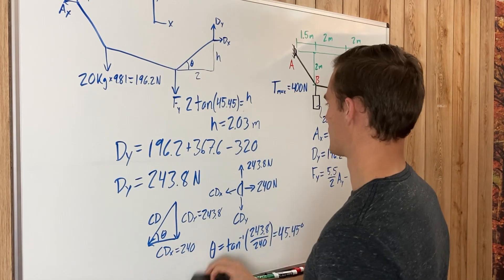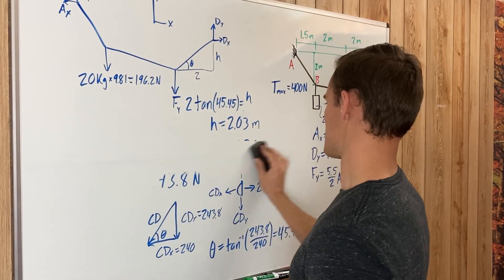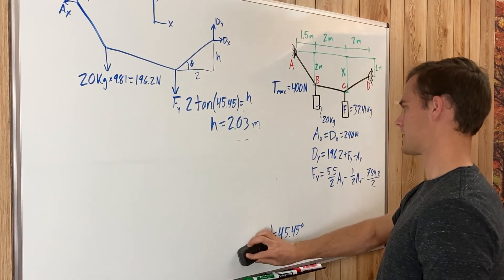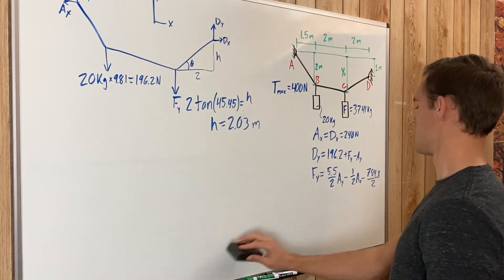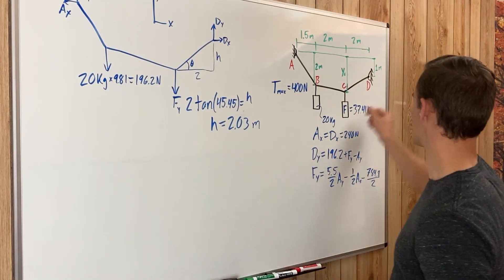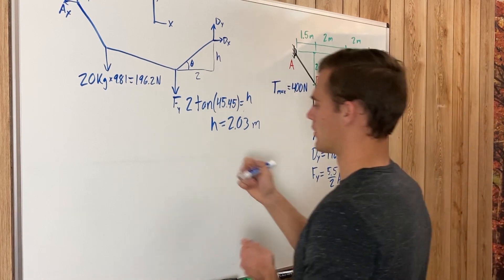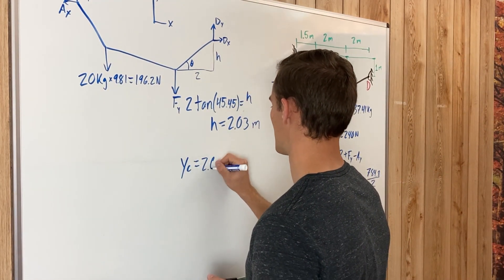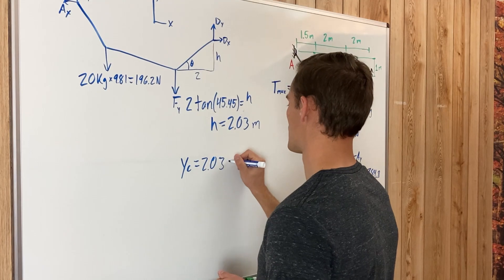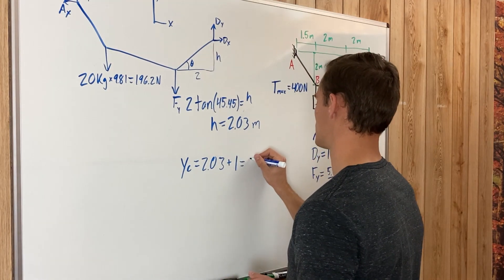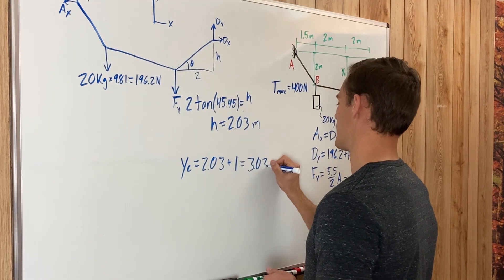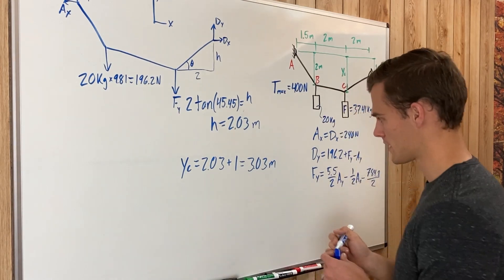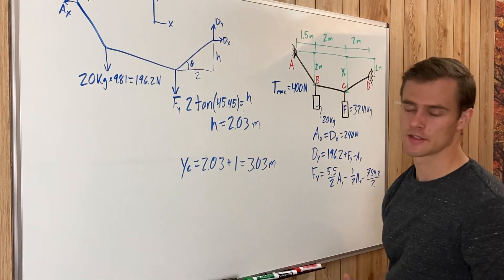We found h, so now it is straightforward to find y sub c. It equals h plus 1 (from the given geometry), so y sub c equals 2.03 plus 1, which equals 3.03 meters. That's the last value we needed to solve for.